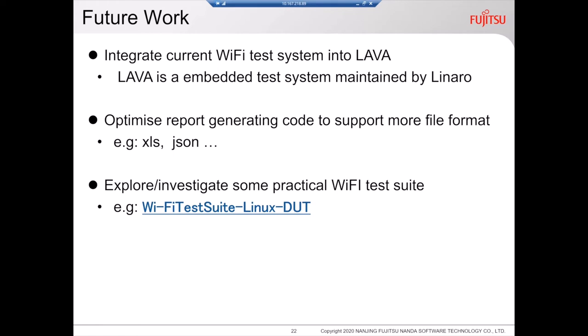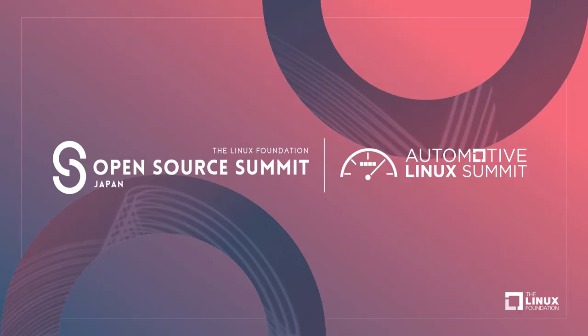That's all for now. For future work, we want to integrate our Wi-Fi test system into Jenkins, and maybe separate it as a test job. We also want to optimize the test report in other file formats. We also want to find some practical Wi-Fi test scenarios to test Wi-Fi system functions. You can also duplicate the Wi-Fi test system setup.